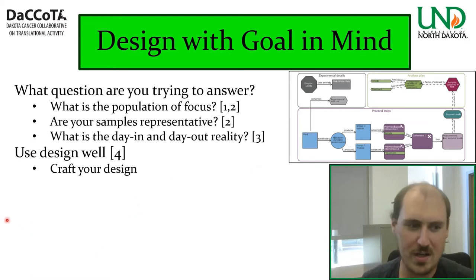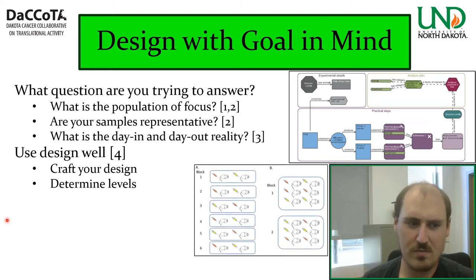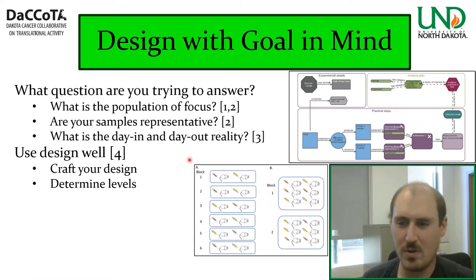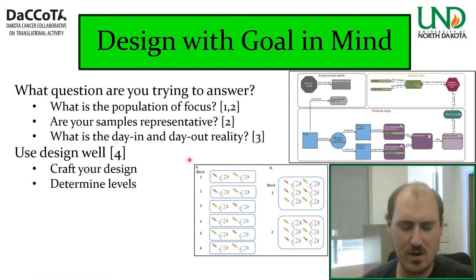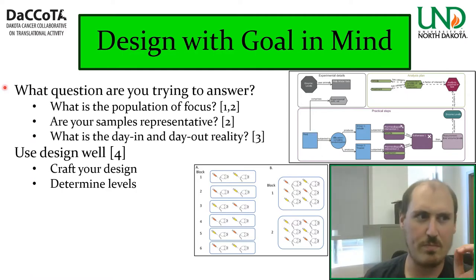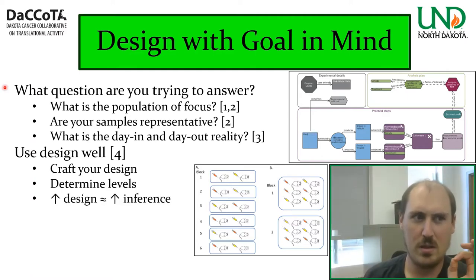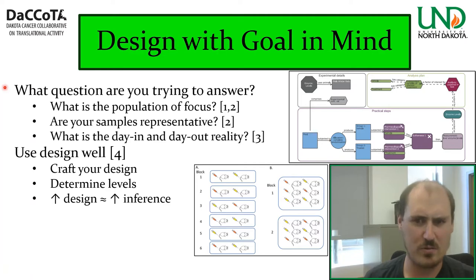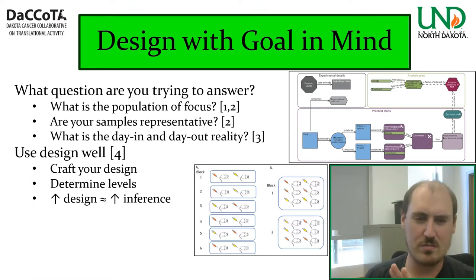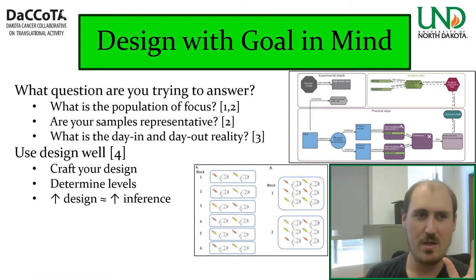You may also want to take into account the levels of design. For example, you might have blocked designs with different blocking structures, or nested samples. Having different levels helps you account for inherent variation ahead of time. Better design leads to better statistical inference, and with a well-designed study you often don't need as many samples as a poorly designed one. Though all the design in the world won't save you from not having enough samples if you do it wrong — but it's a good start.